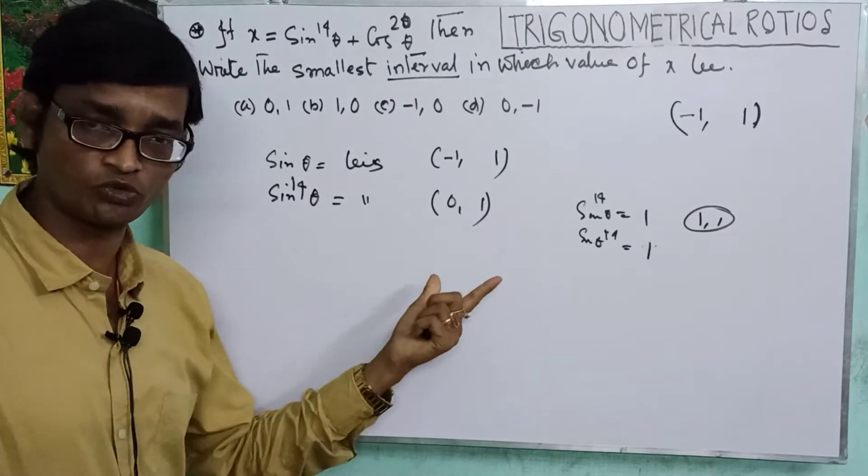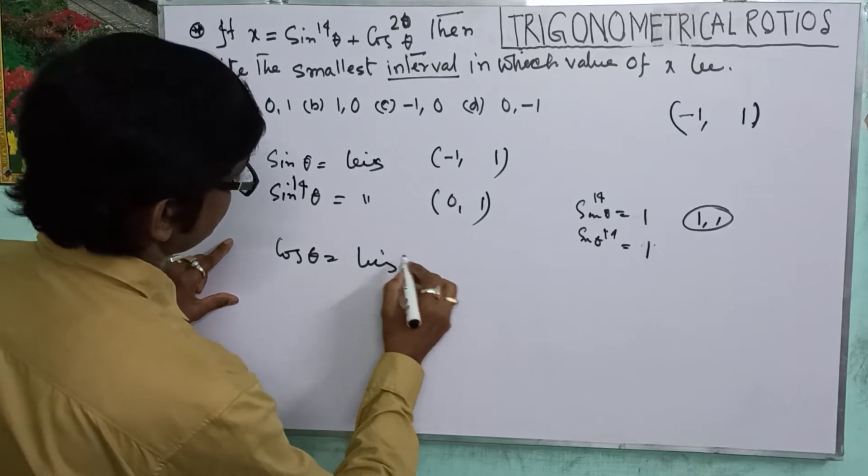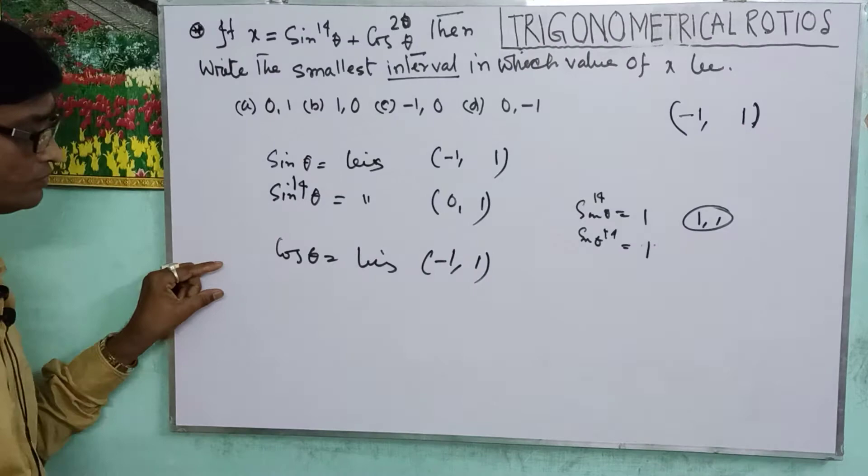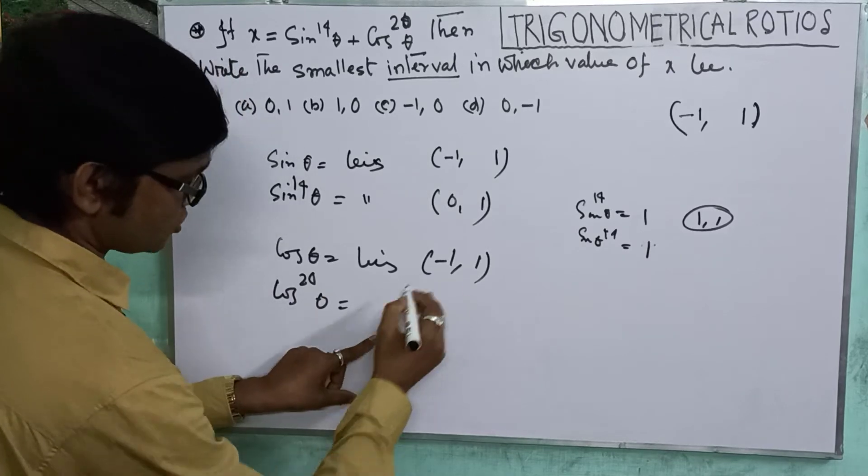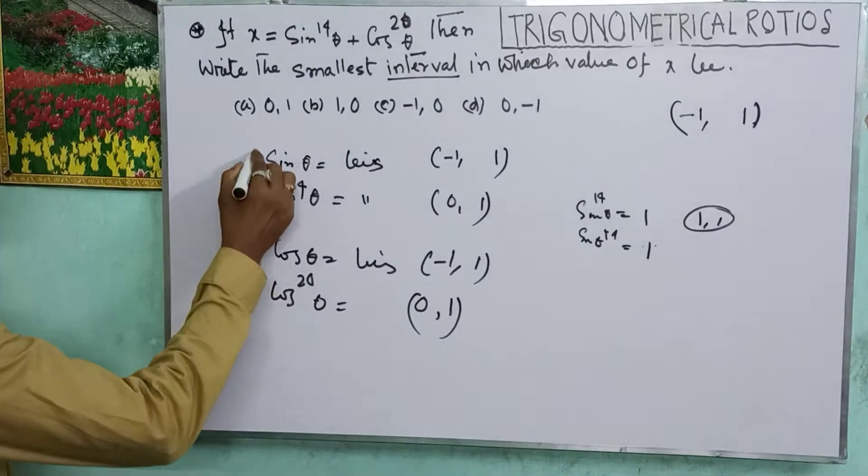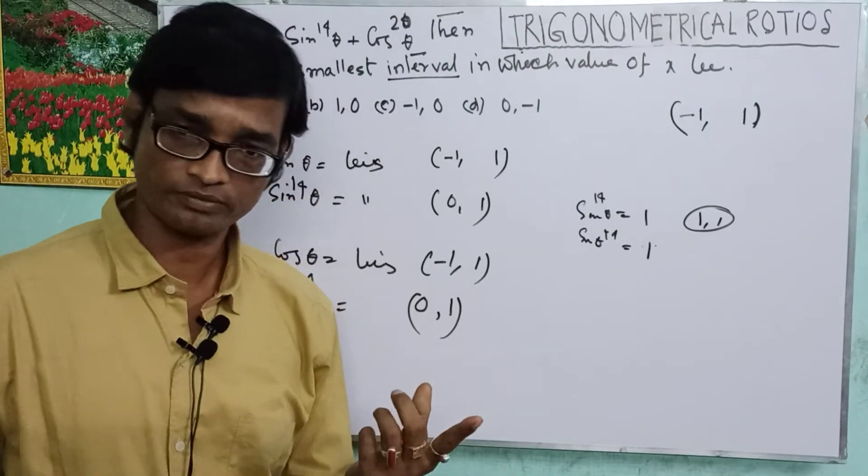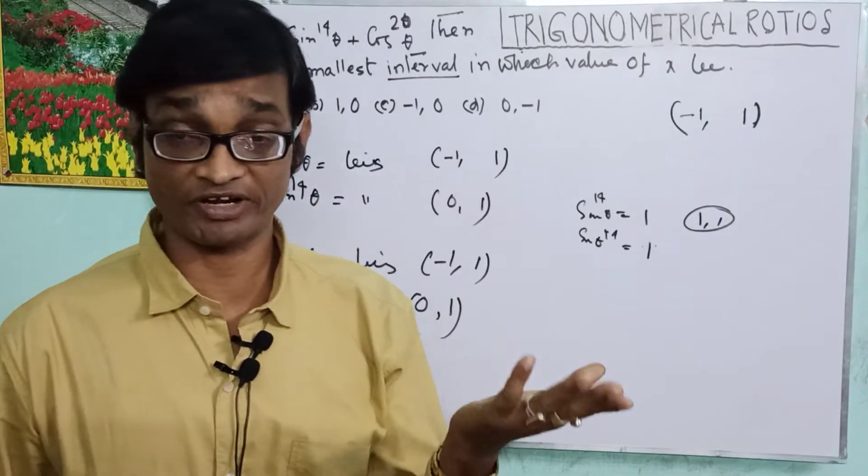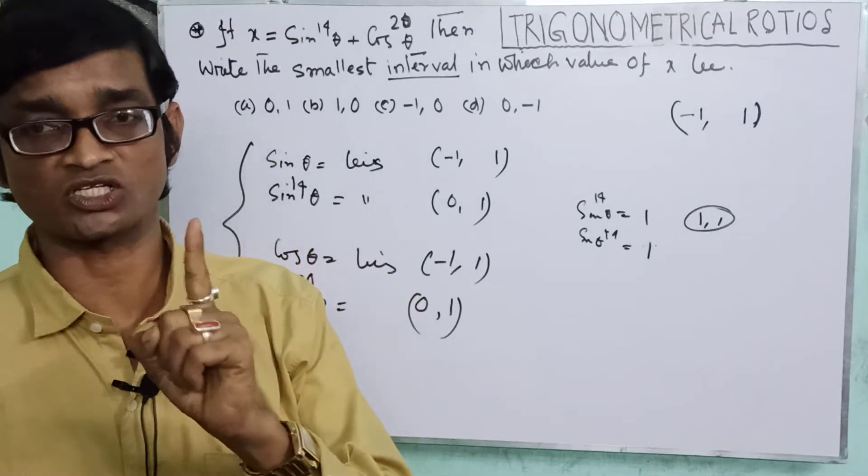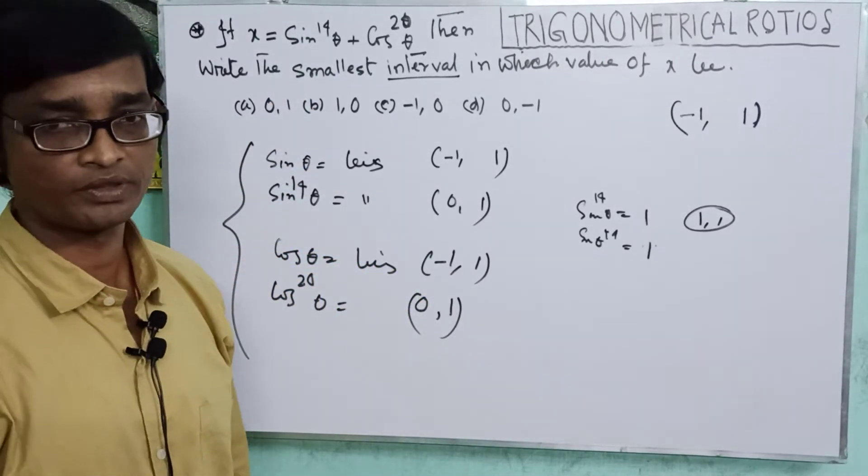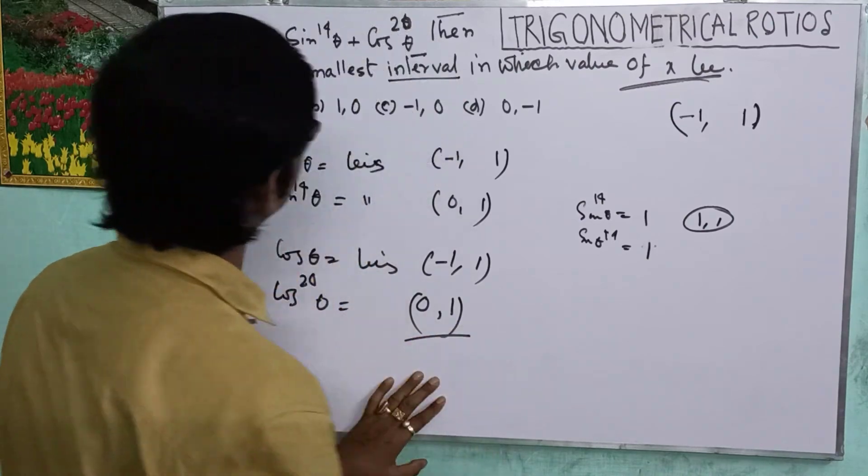Friends, cos squared 20 theta - suppose cos theta equals minus 1, then cos squared equals plus 1. Total - cos squared of even number means cos squared 20 theta equals plus 1. So the range is 0 to 1. Therefore, X ranges from 0 to 1. The answer is option A, the interval 0 to 1.